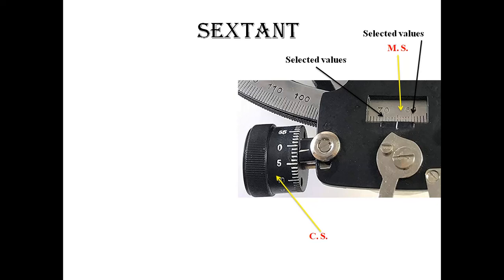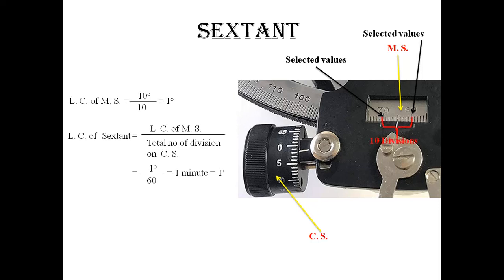Here I am showing a picture of the sextant. I am taking two selected values: 16 and 17. The difference between 16 and 17 is equal to 10 degrees, and the total number of divisions between the two selected values is 10 divisions. So the least count of the main scale is 10 degrees divided by 10, which equals 1 degree. The least count of the sextant is equal to the least count of the main scale divided by the total number of divisions on the circular scale.